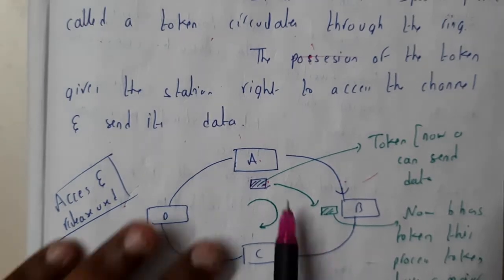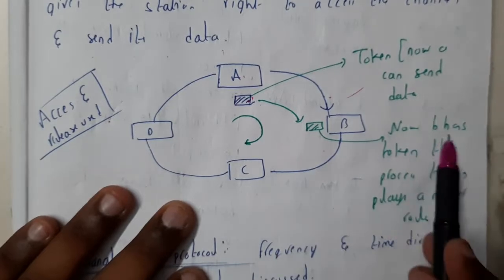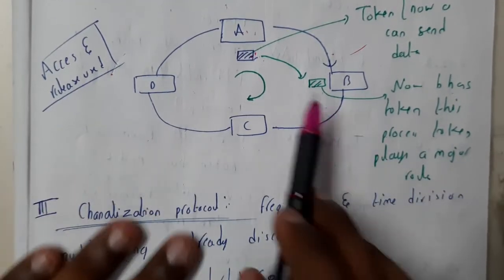Here, initially the token is at A, so now A can send the data. If token moves to B, now B can send the data as the packet is near B.